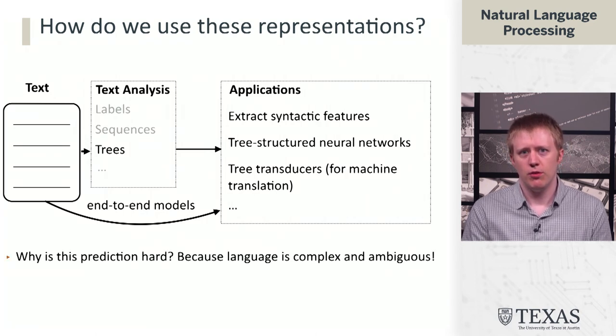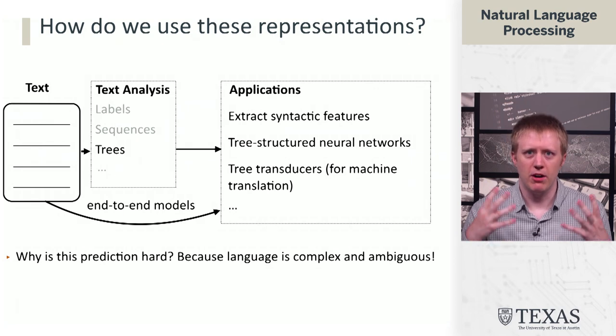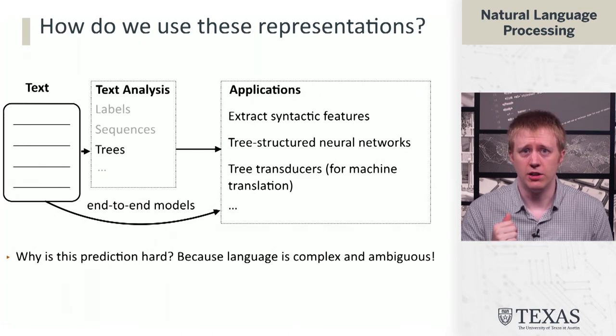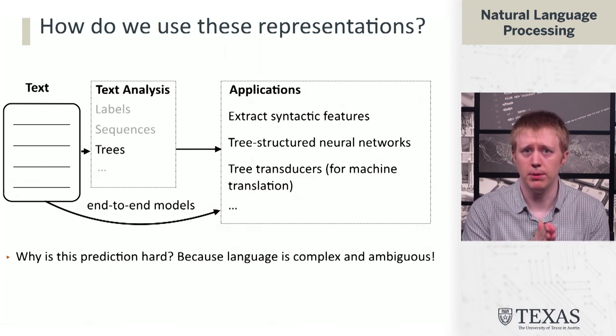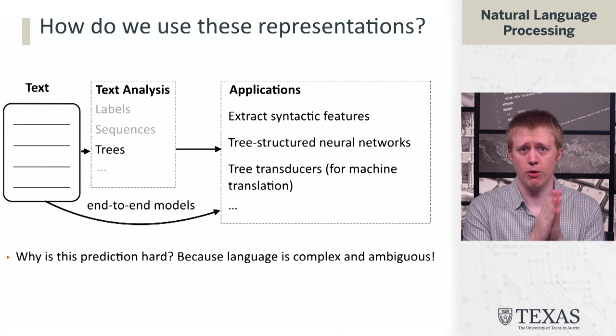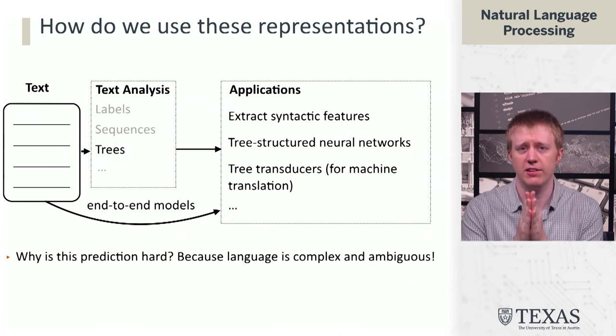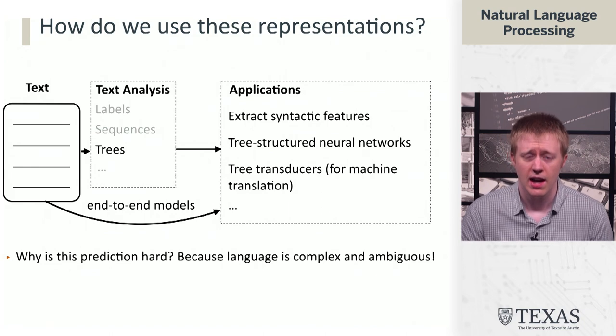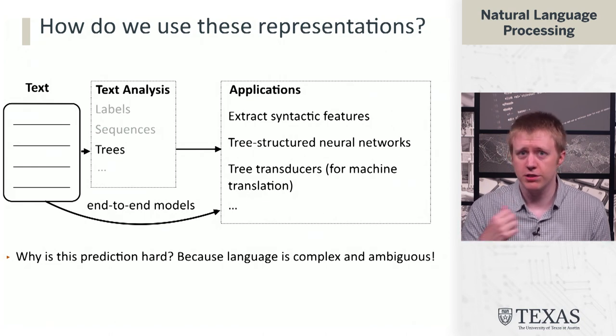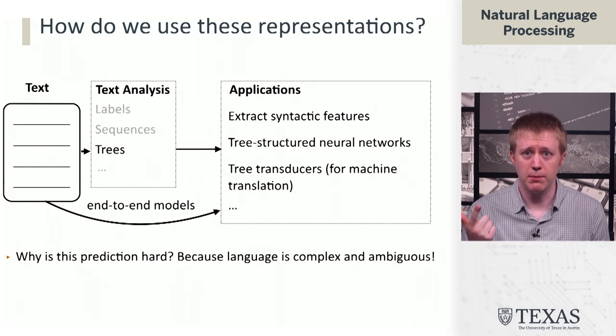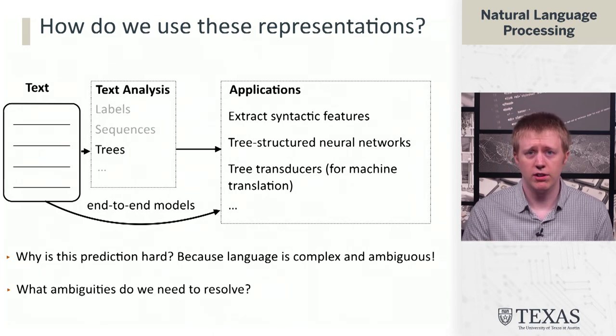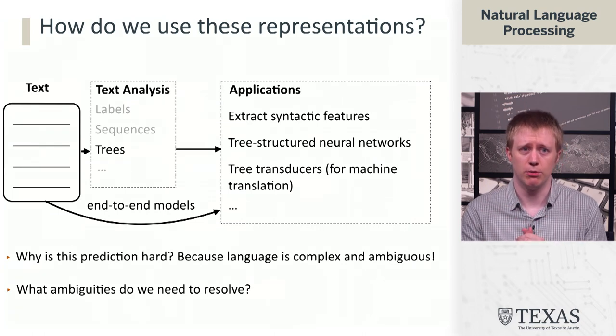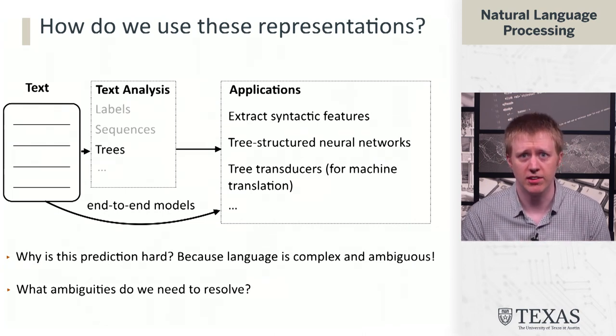We have to think about also why any of these predictions is hard. I mentioned that we're going to need to build some sort of statistical models for mapping both from text to these analysis layers and then also going from the analysis layers to the applications. The reason this is hard is because language is complicated and language is ambiguous. In order to understand that a little bit more, we're going to talk about what ambiguities we need to resolve and what ambiguity means in this context.